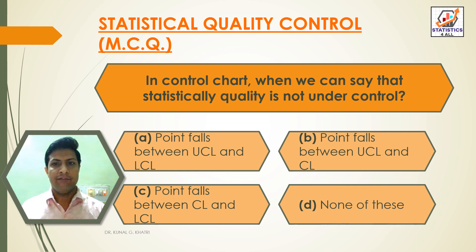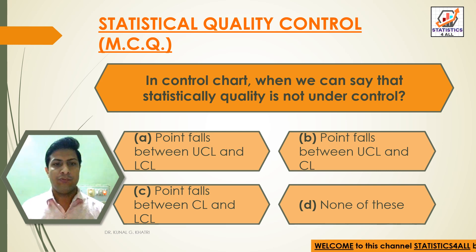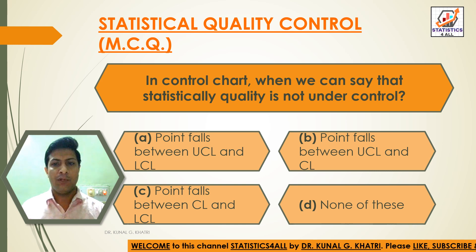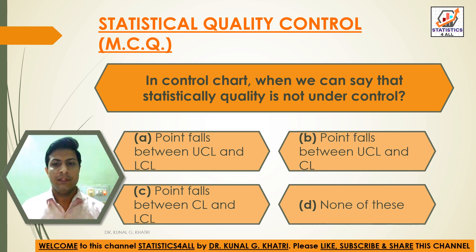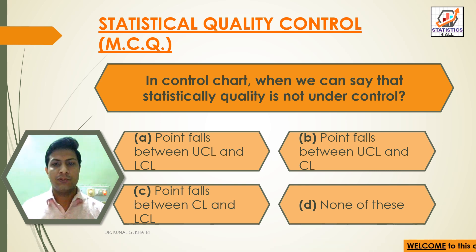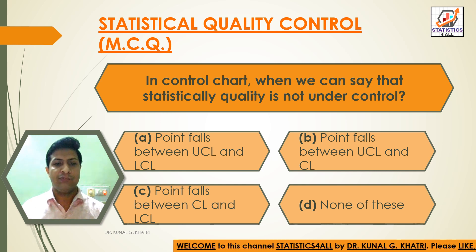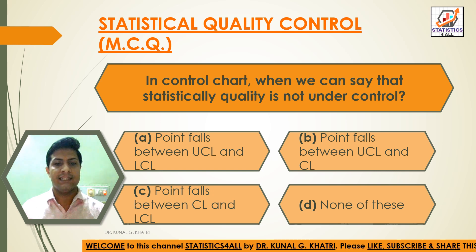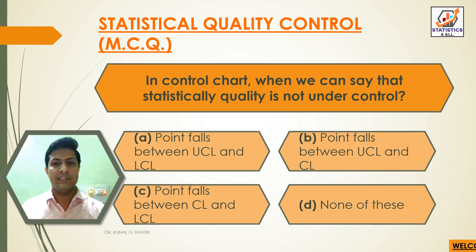Question 2: In a control chart, when can we say that statistical quality is not under control? Option A: Point falls between UCL and LCL, Option B: Points fall between UCL and CL, Option C: Points fall between CL and LCL, Option D: None of these. Answer: Option D — None of these.